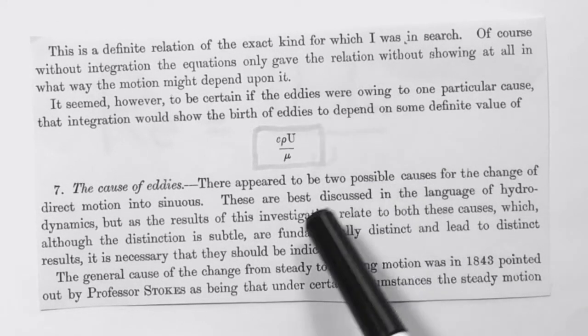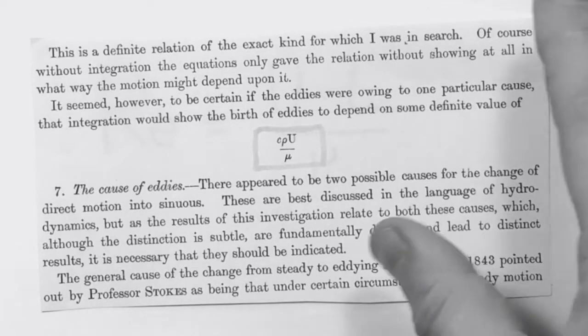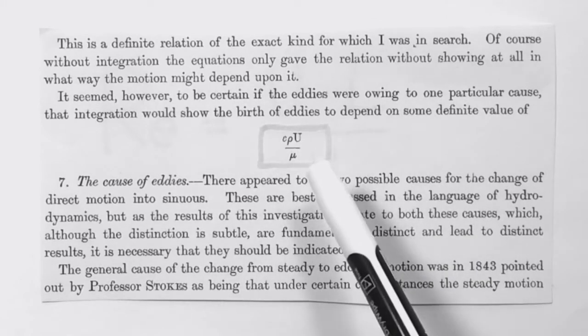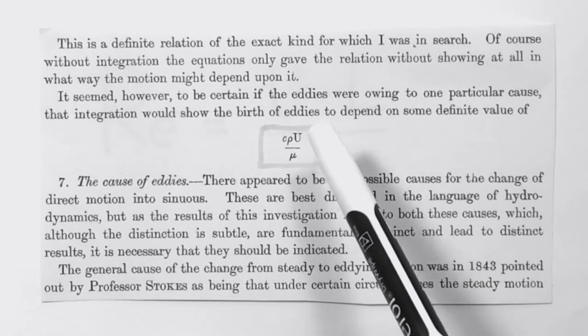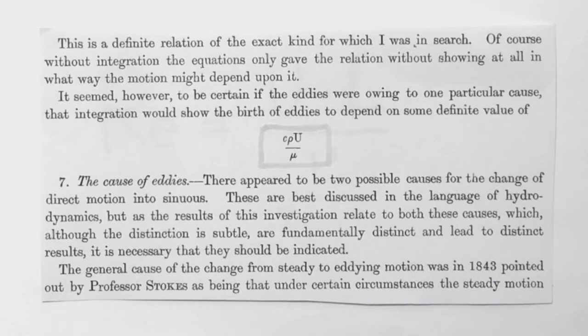Here ρ is the density, μ is the dynamic viscosity, u is the mean velocity of the flow in the pipe, and c is the diameter of the pipe. Not clear why Reynolds uses c. But if you see, he already has the idea that the birth of eddies depends on some definite value of this non-dimensional number. Of course, it took 20 years for the scientific community to define this non-dimensional number as the Reynolds number.